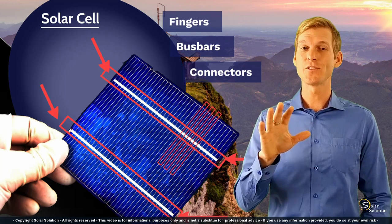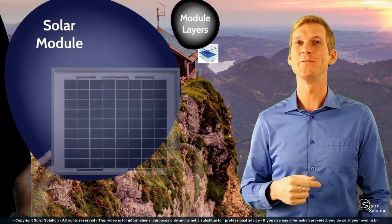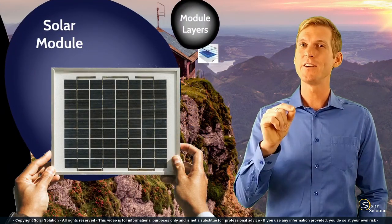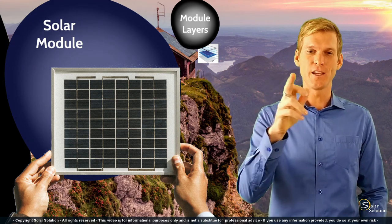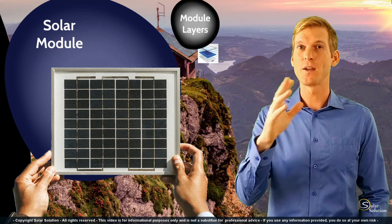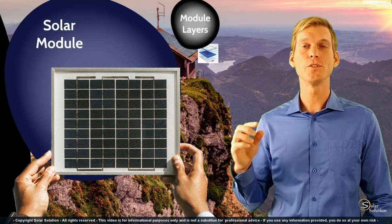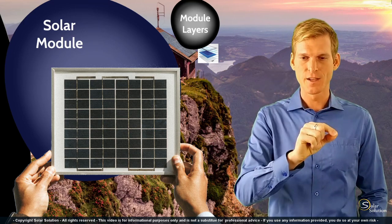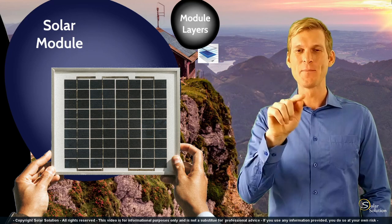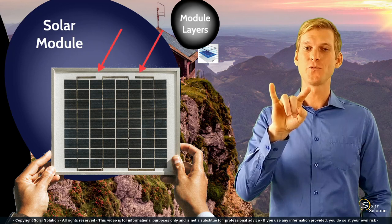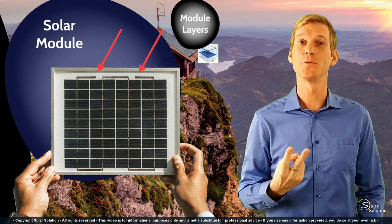If we combine all the solar cells together, we create a solar module — something you'd easily recognize. You can identify the individual solar cells, the bus bars connecting all the cells, the frame around it, and the backing sheet. If you look closely, all the cells are connected in one long string — like a snake — and the head and tail of the snake are where the bus bars exit through the panel; on the backside, that's where the wires connect.